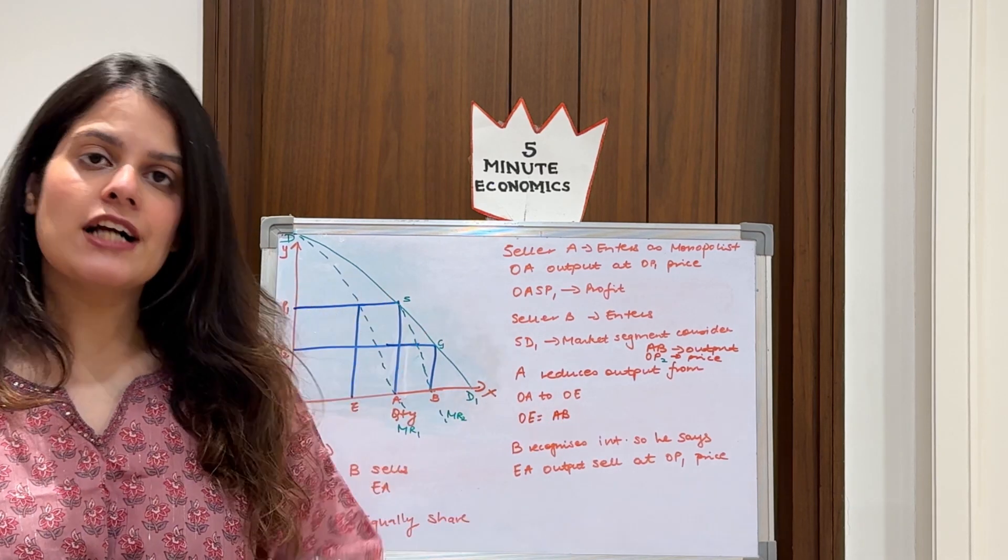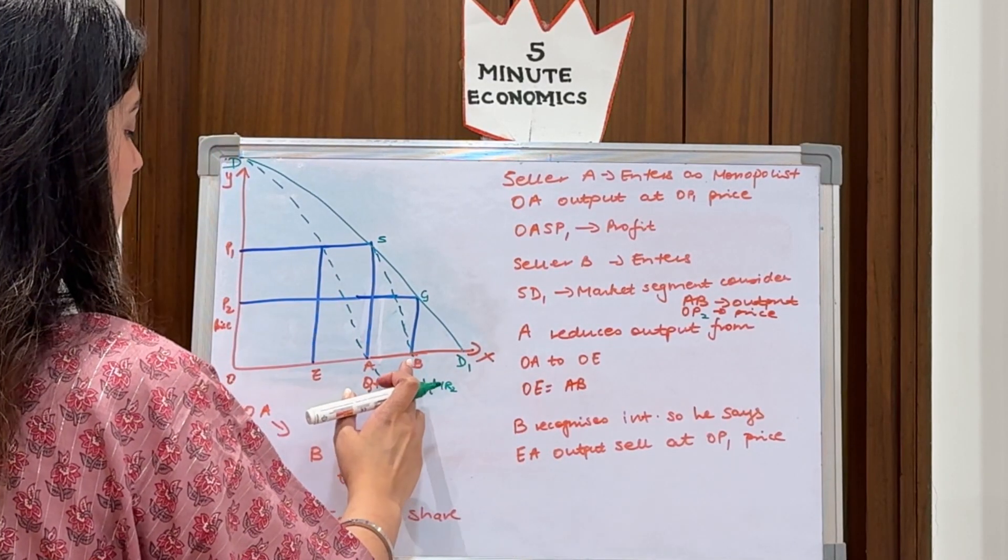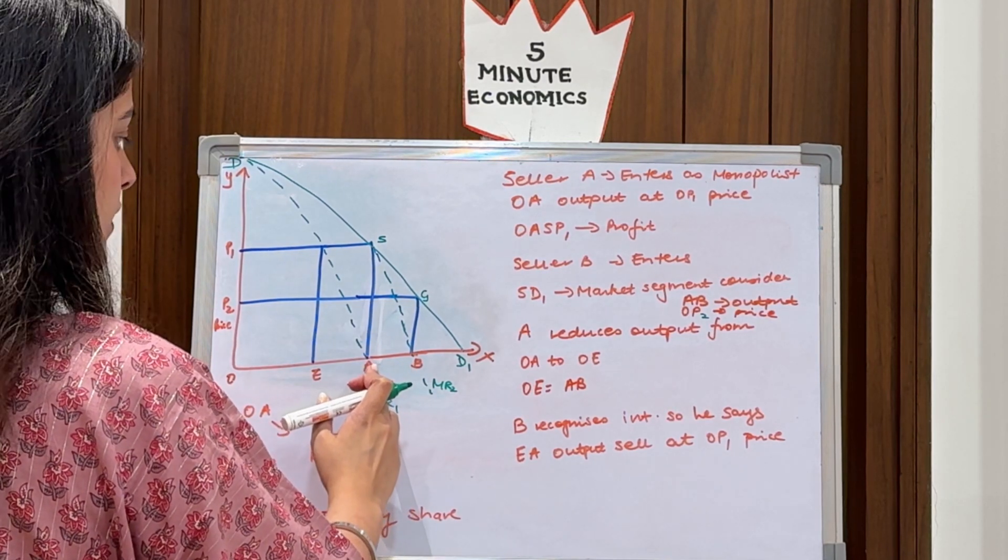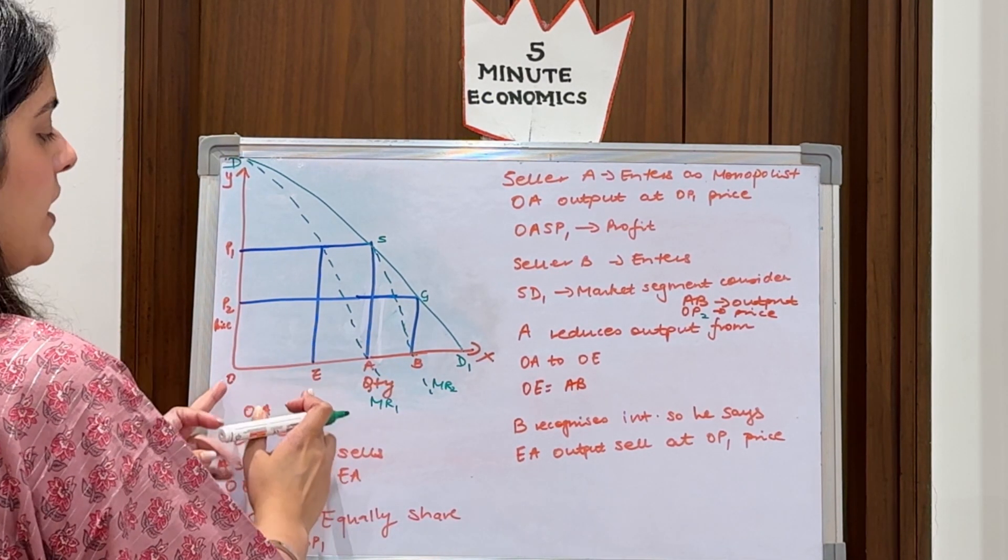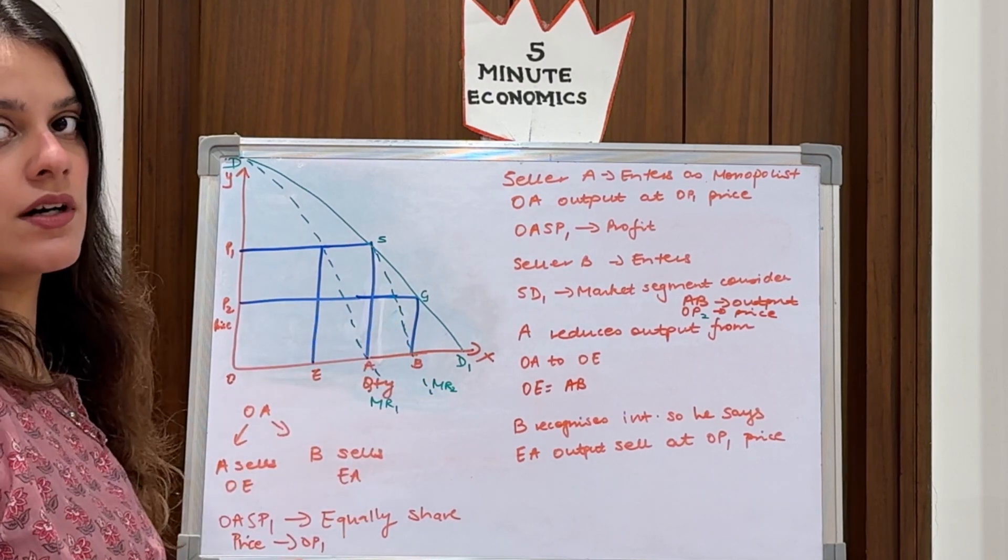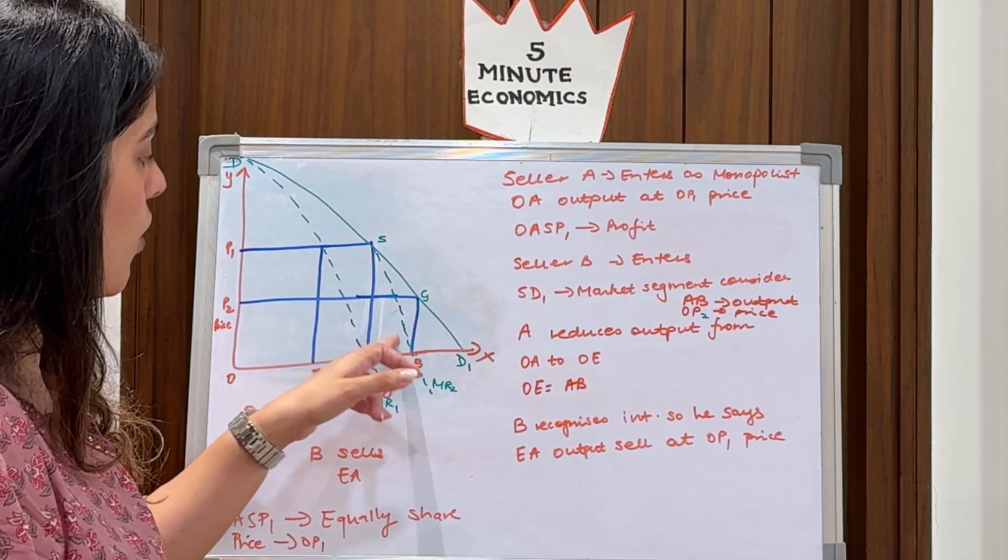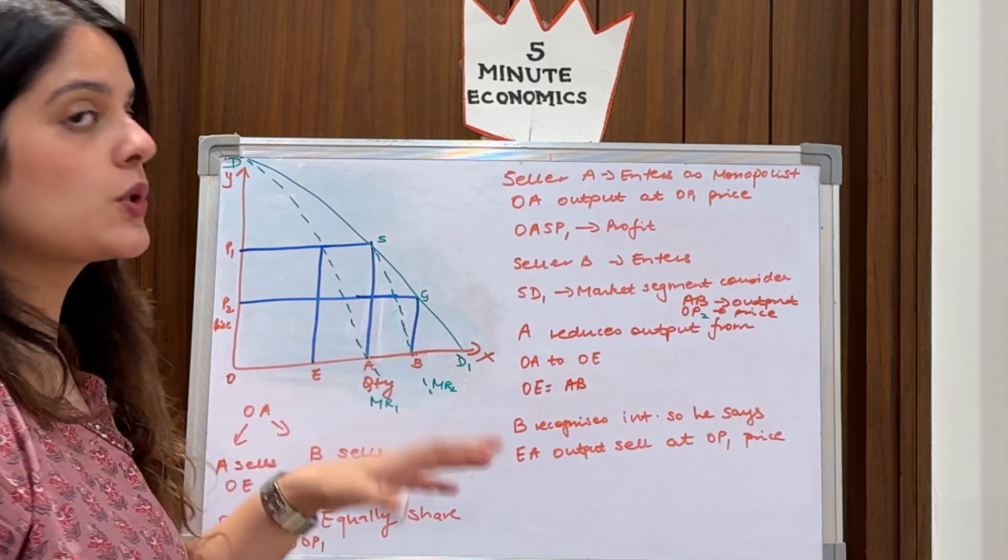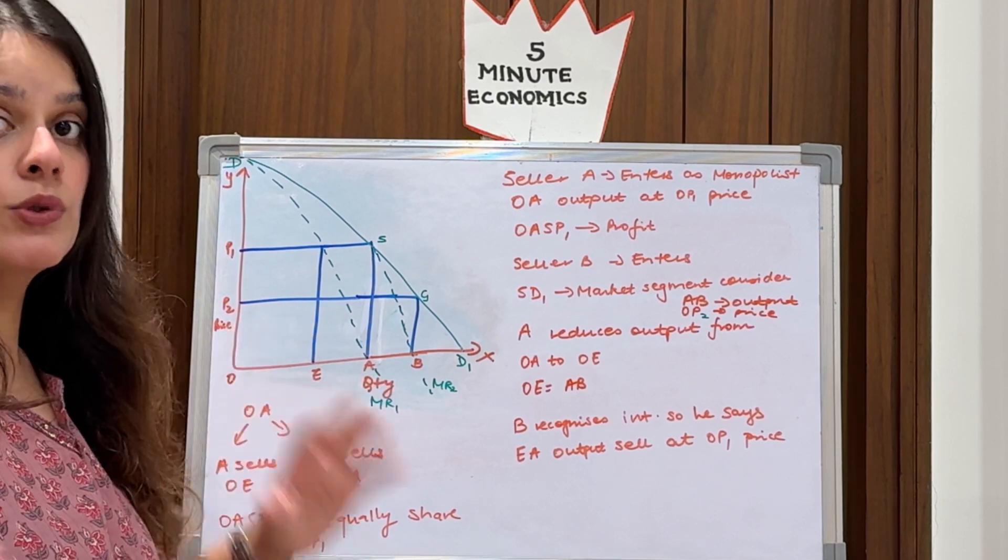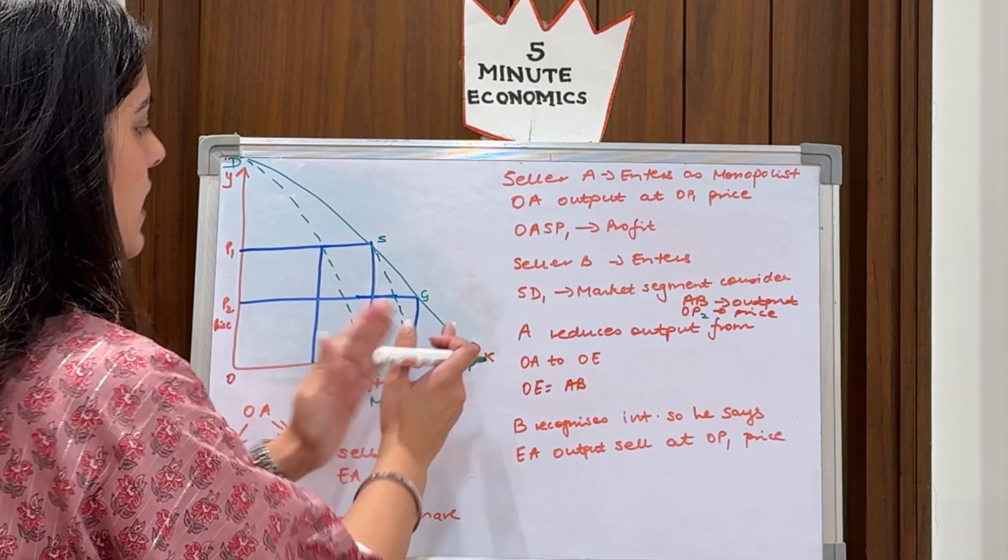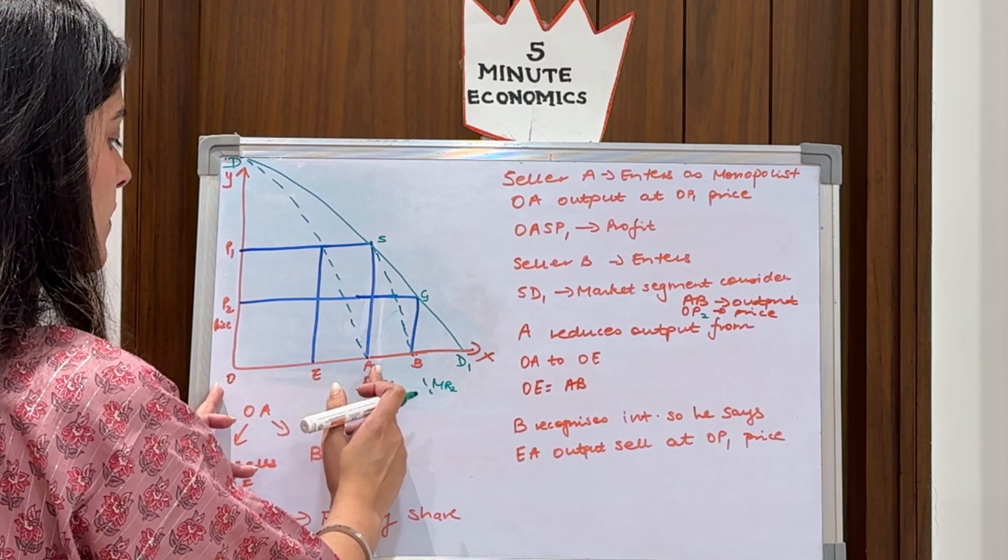Rather than not reacting at all or ignoring or thinking that he will not do this or that, he actually plays smart and he reduces his output from OA, which he was producing initially, to OE. He makes this output half. That is why I drew this diagram two or three times. These three blocks which are there - one, two, three - should look equal because they are supposed to be equal. When you draw, please make sure that they are in equal proportion.